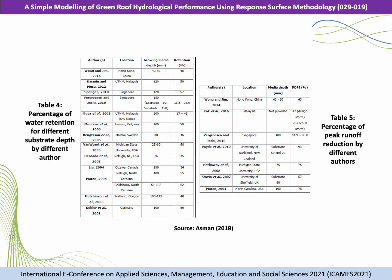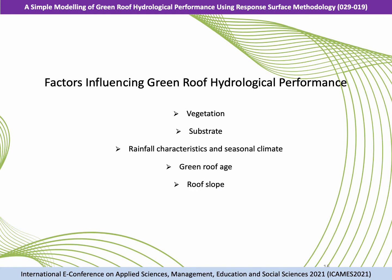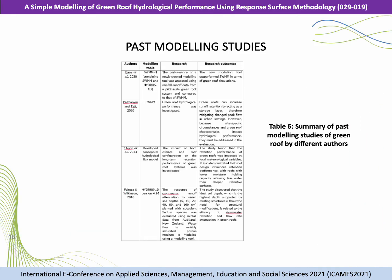Table 4 shows the percentage of water retention for different substrates by different researchers. Table 5 shows the percentage of peak runoff reduction done by several researchers in the past few years. There are a few factors affecting green roof hydrological performance, for example vegetation, the substrate, rainfall characteristics, seasonal climates, green roof edge, and roof slope. Table 6 shows a summary of past modeling studies of green roof done by several researchers.